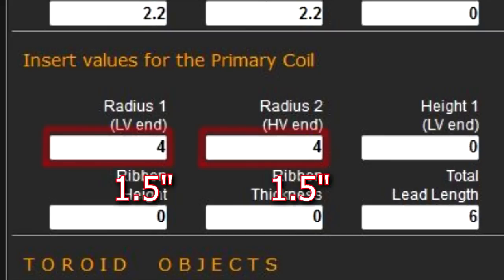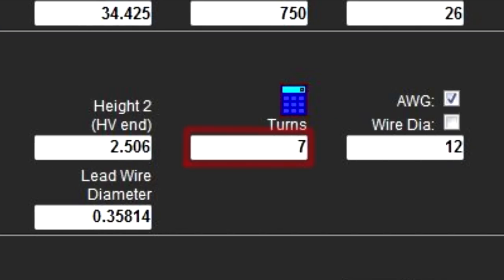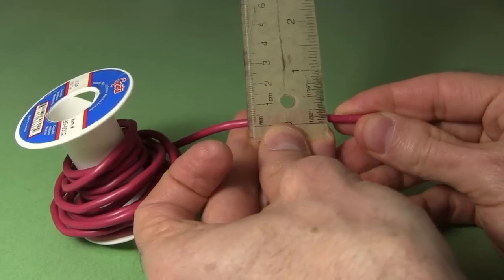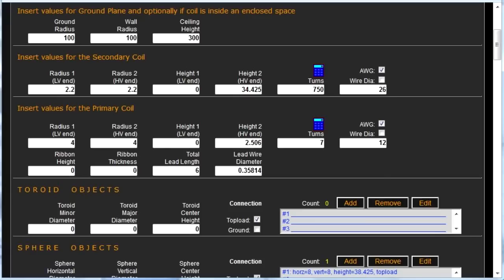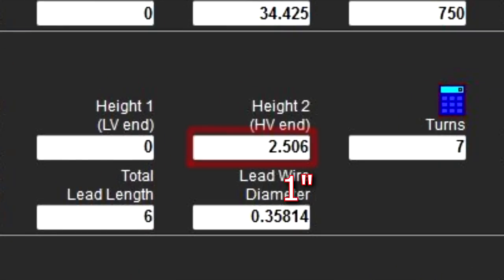From playing around with the calculator I found that a 4 centimeter radius with 7 turns of wire gives me the needed resonant frequency. I calculate the height of the coil by measuring the diameter of the wire and multiplying it by 7, which gives me around 2.5 centimeters.